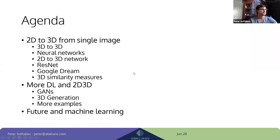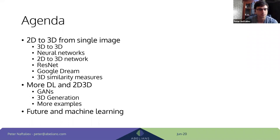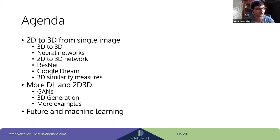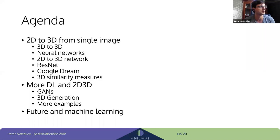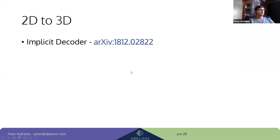Just feel free to jump in whenever. You can use your video and audio — that's why we had the Zoom screening process, to allow people to use video and audio without Zoom bombing. The code, project, and paper we're going to follow is called the Implicit Decoder. The arXiv link is here; on the Reddit group there's a post with all the references, including my blog post and the ShapeNet dataset.